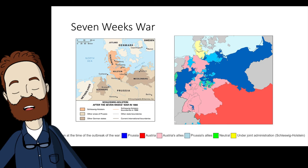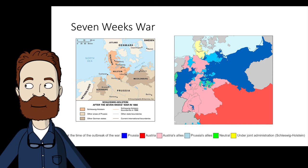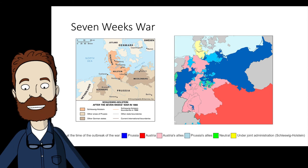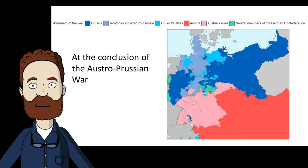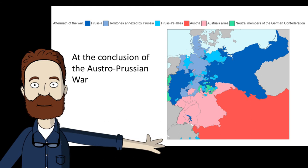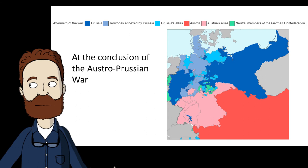There would be two houses: the upper house representing the governments of several states, and the lower house elected by universal male suffrage. Looking at the corresponding map, we can see the conclusion of the Austro-Prussian war and the territorial changes that resulted. For a more detailed look at this presentation, please refer to your Canvas page.